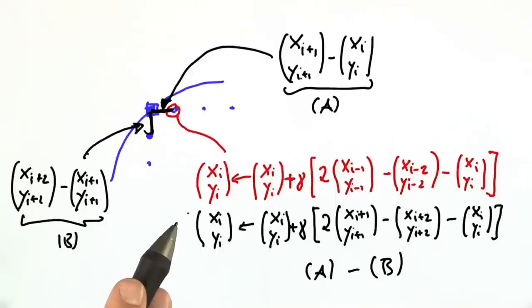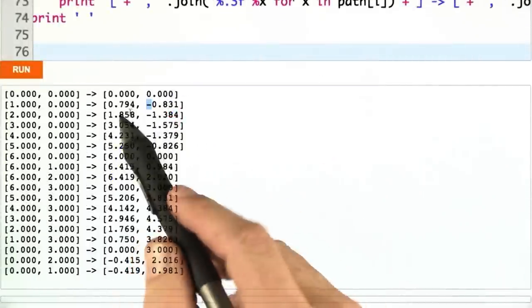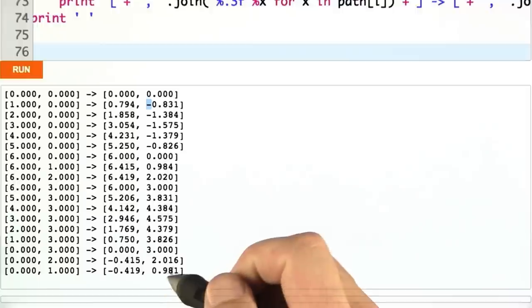And when you do this, please make sure that your update understands the fact that these indices are cyclic. So I did this in my code, and I'm running it, and out come the following numbers that you can read over here.